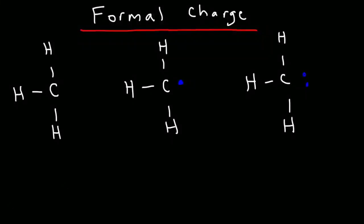Now there's a formula that will help you to calculate the formal charge of an atom. And here it is. The formal charge is going to be equal to the number of valence electrons of the element minus the number of bonds and dots attached to that element.